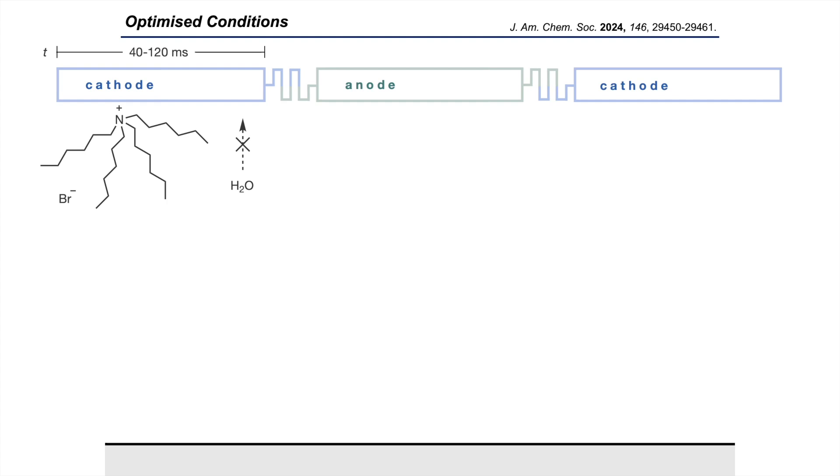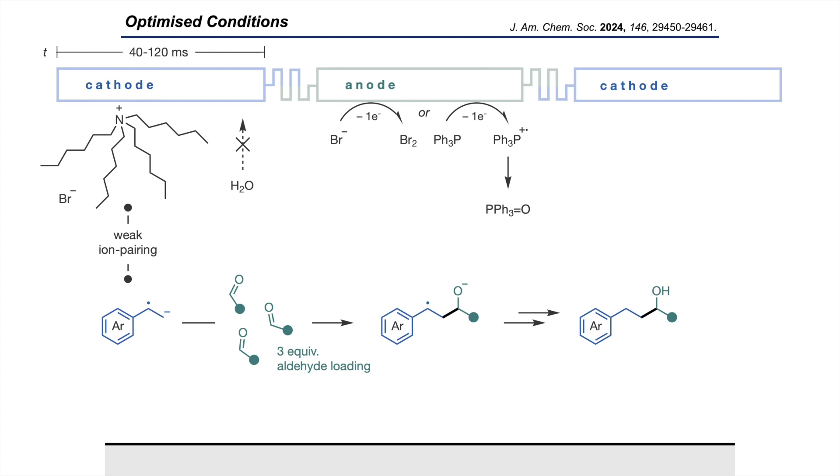We discovered that three equivalents of alkyl aldehyde were necessary to achieve maximum yields for coupling. For the anodic processes, we discovered an unusual dependency on the presence of both bromide as the counter anion from the electrolyte and exogenous triphenylphosphine added to the reaction mixture.